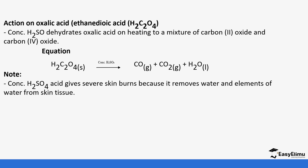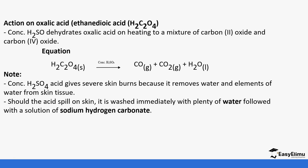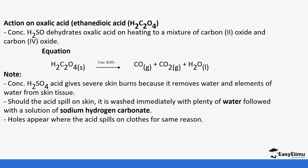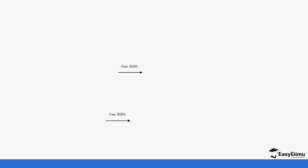Concentrated sulfuric acid gives severe burns, as it removes water elements from the skin and tissue. This is why if you spill the acid on your skin, you wash it thoroughly with a lot of water or with a solution of sodium hydrogen carbonate. Holes also appear when the acid spills on clothes for the same reason.